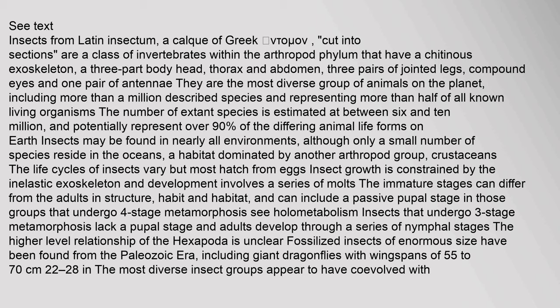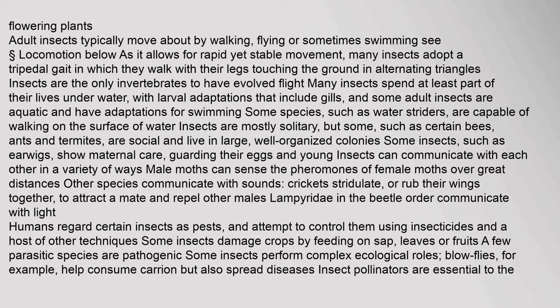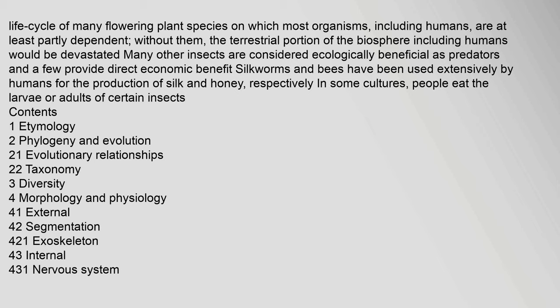Fossilized insects of enormous size have been found from the Paleozoic era, including giant dragonflies with wingspans of 55 to 70 cm. Adult insects typically move about by walking, flying or sometimes swimming. Insects pollinate many flowering plant species on which most organisms, including humans, are at least partly dependent. Without them, the terrestrial portion of the biosphere including humans would be devastated. Many other insects are considered ecologically beneficial as predators, and a few provide direct economic benefit. Silkworms and bees have been used extensively by humans for the production of silk and honey respectively. In some cultures, people eat the larva or adults of certain insects.